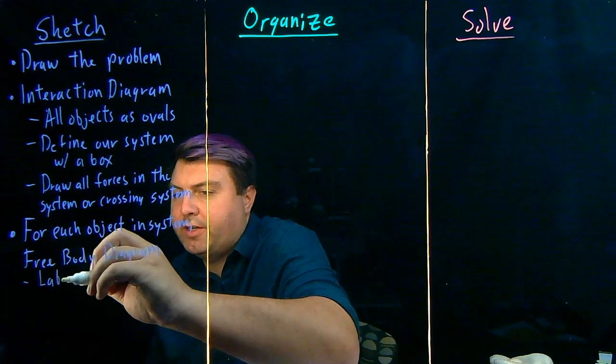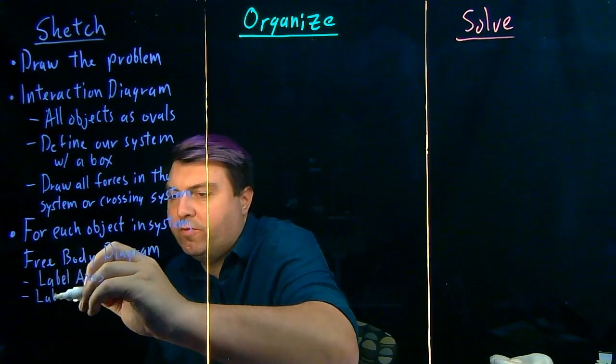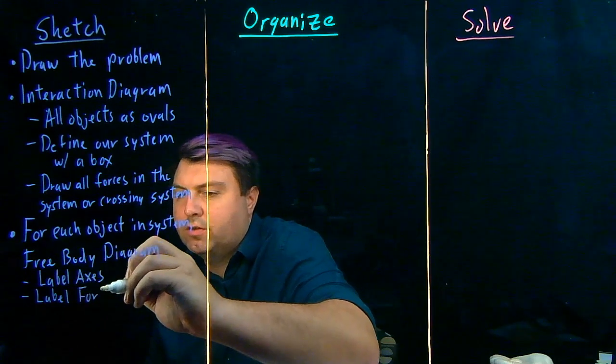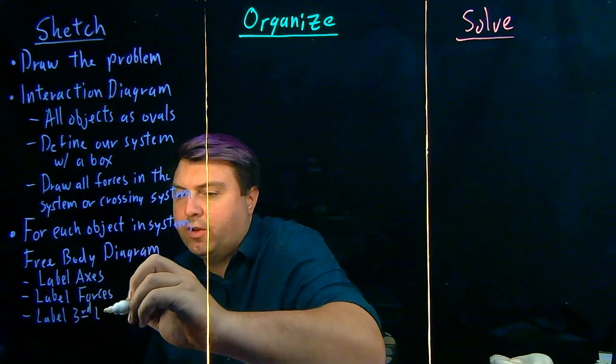When we do our free body diagram, for each of these we want to label axes, label forces, and label our third law pairs.